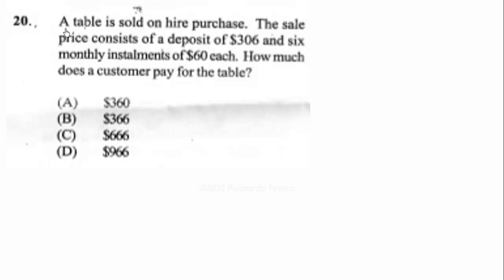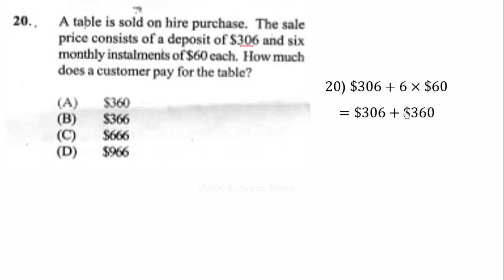A table is sold on hire purchase. The sale price consists of a deposit of $306 and six monthly installments of $60 each. How much does a customer pay for the table? Six installments of $60 gives $360. Adding the deposit of $306 to $360 gives $666. Therefore the correct answer is C.